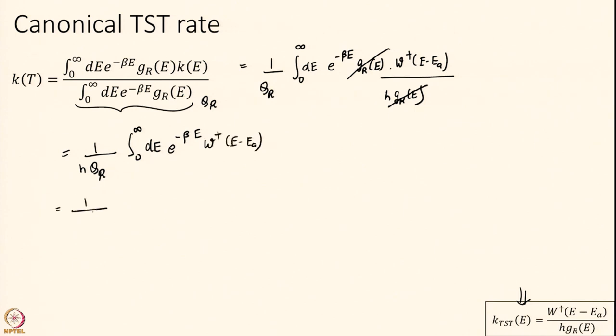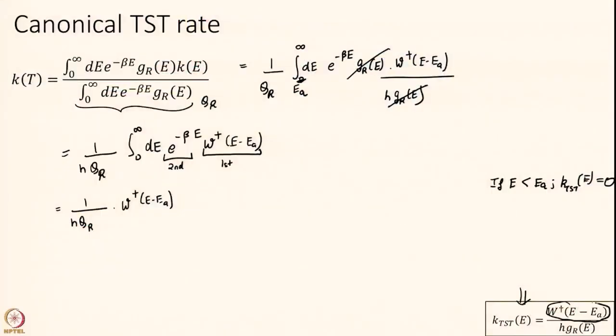Integral 0 to infinity dE. I will do an integration by parts here. I will call this as my first function, this as my second function. So I will write this as W dagger. Let me before I do that, let me do one more thing. I realize that this integration that I am doing should be only from E_A to infinity. Because if E is less than E_A, K_TST of E is actually equal to 0. So the reaction happens only if energy is greater than E_A. The entire microcanonical transition state theory rate that we are deducing is for energies above E_A. This W dagger has no sense if E is less than E_A.